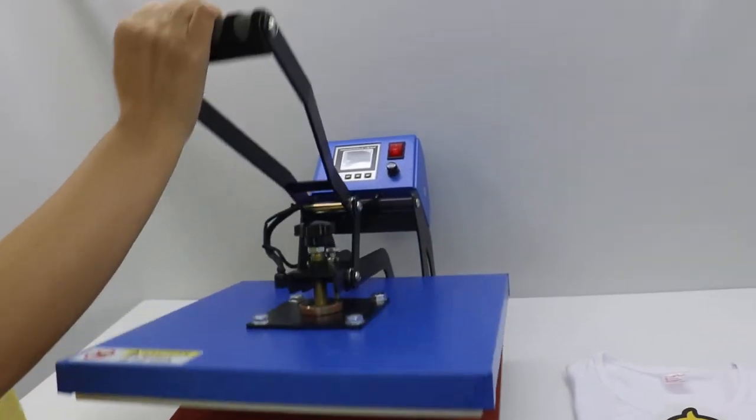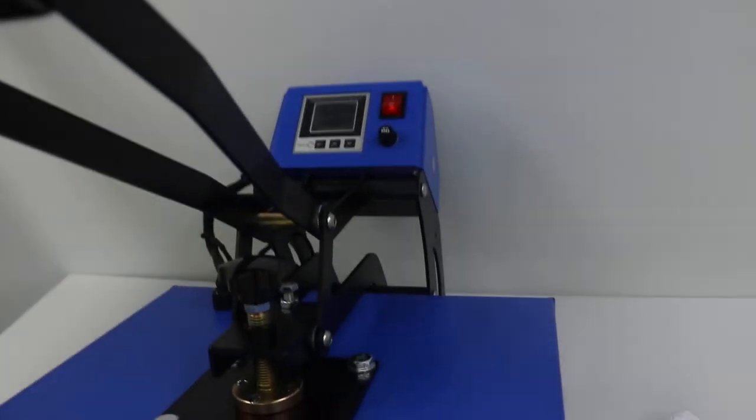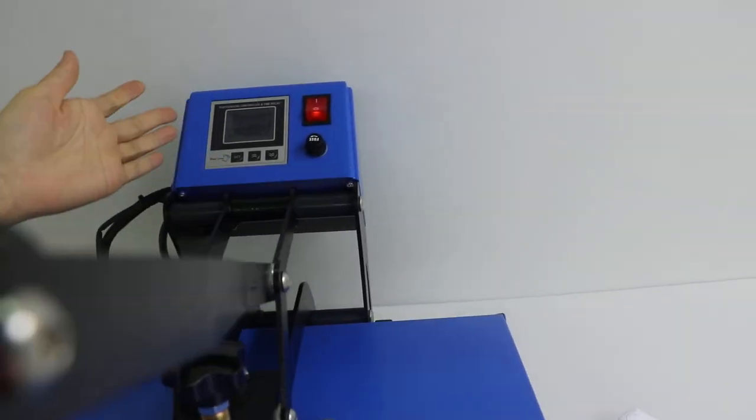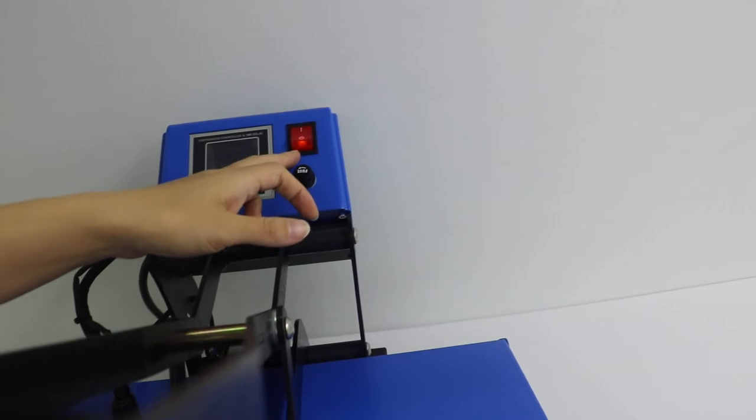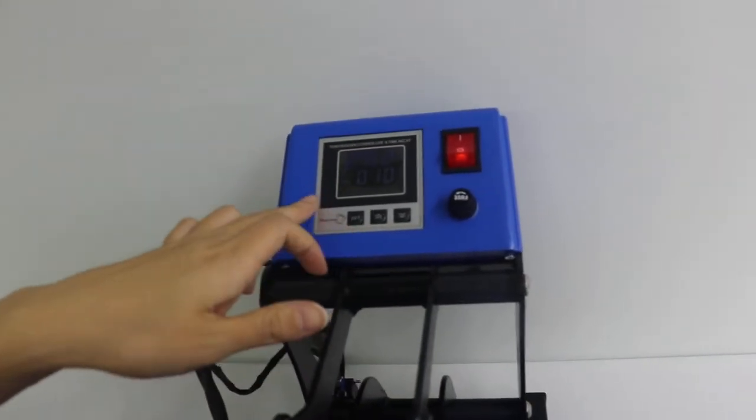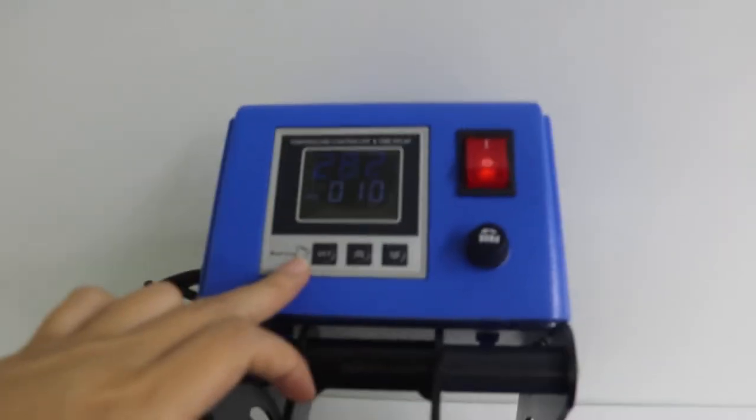This is the control panel here. This is the control box. This is the power button. This is the temperature cam and the counter 3-in-1 controller.